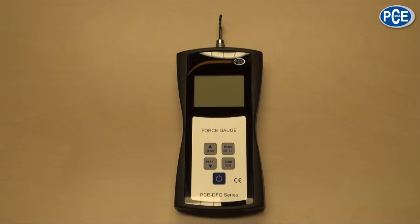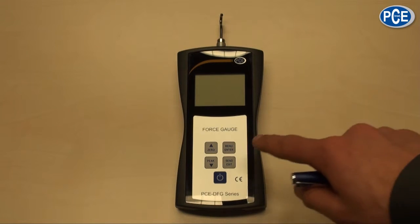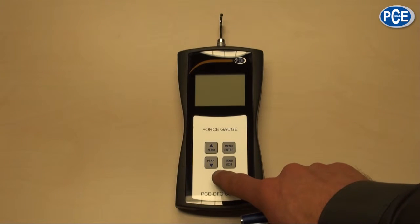The measuring instruments of the PCE DFG series have five buttons: four buttons with a white background and one button with a blue background. It is a touch operating panel, you only have to touch the buttons. The blue button is the on-off button. If you touch this more than two seconds, the instrument turns itself on.